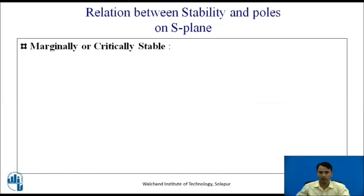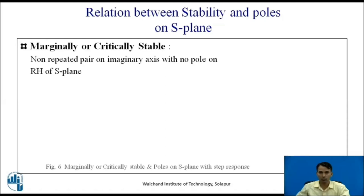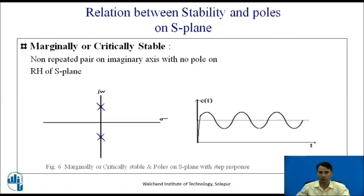For a marginally or critically stable system, the condition is that the poles should be non-repeated on the imaginary axis with no pole on the right hand side of the S-plane. The response will be bounded — a sinusoidal signal that is neither increasing nor decaying.